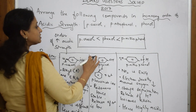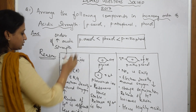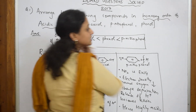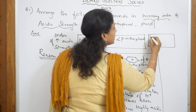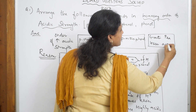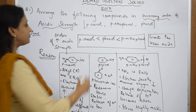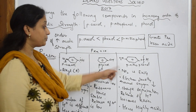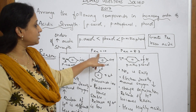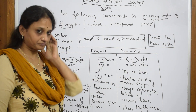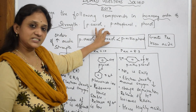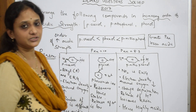We can also compare acidity using pKa values. Remember: greater the pKa value, lesser the acidity. The pKa for phenol is 10 and for paranitrophenol is 8.3. Since phenol's pKa is higher, it is less acidic. So the final increasing order of acidic strength is: paracresol (electron-releasing, least acidic) < phenol (resonance) < paranitrophenol (electron-withdrawing, most acidic).